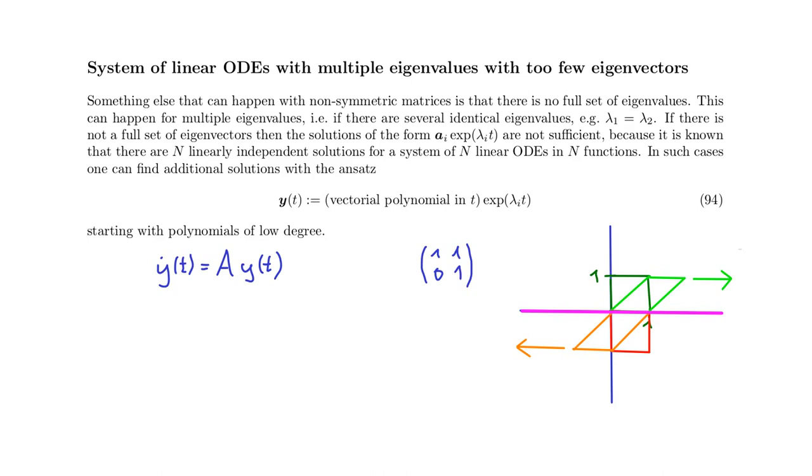Now we know that for the eigenvectors that we have, the solutions are of the form a exponential lambda t, where a is the eigenvector and lambda is the eigenvalue. We also know that for a system of linear ODEs with constant coefficients, with n equations and n functions, therefore an n by n matrix A, there must be n linearly independent solutions. But if the matrix only has one eigenvector, we can generate only one solution of the type that I have just written.